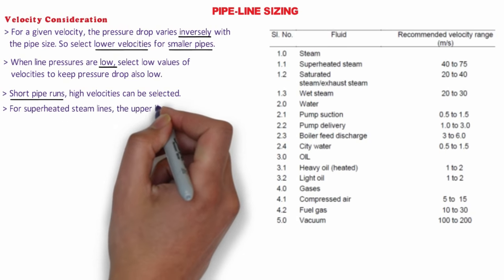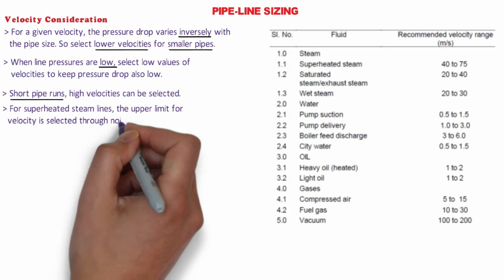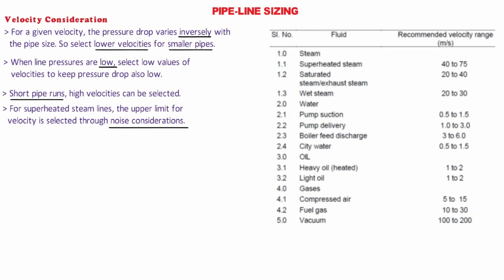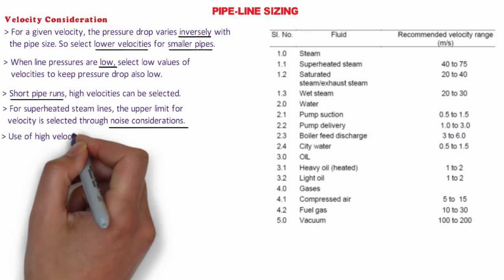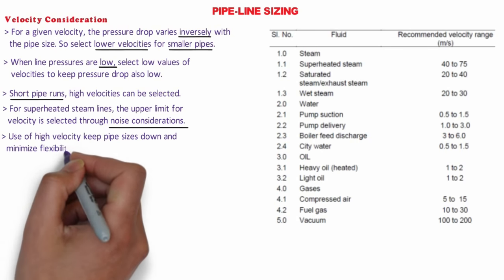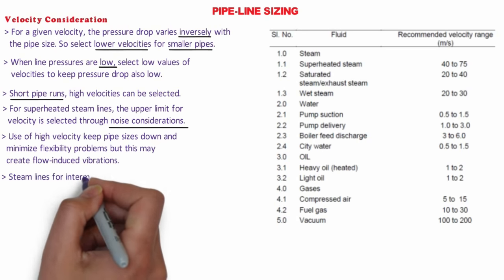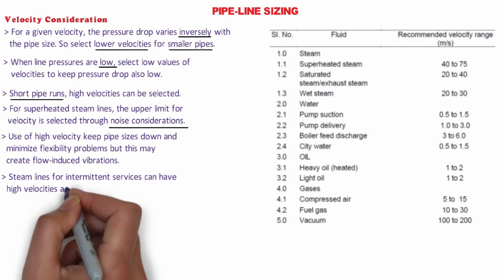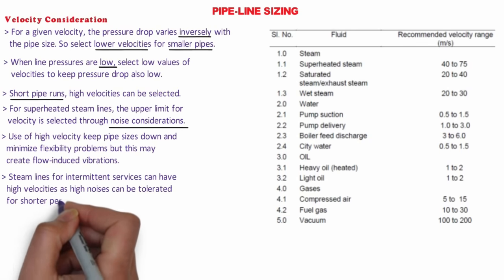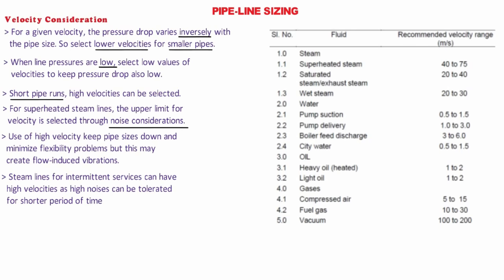For superheated steam lines, the upper limit for velocity is selected through noise considerations. For outdoor lines, high velocities are acceptable, but for indoor lines, velocities are usually limited to 50 m/s or less. In case of high temperature and high pressure steam piping, pipe expansion introduces flexibility problems. Use of high velocity keeps pipe sizes down and minimizes flexibility problems, but may create flow-induced vibrations. Steam lines for intermittent service can have high velocities as high noise can be tolerated for shorter periods. Where pressure drop is unimportant, velocities as high as 75 to 100 m/s are acceptable. For exhaust steam lines, high velocities of 100 m/s are acceptable.